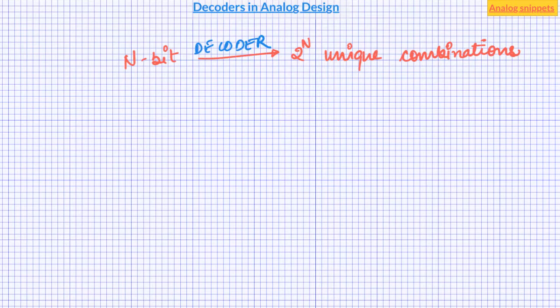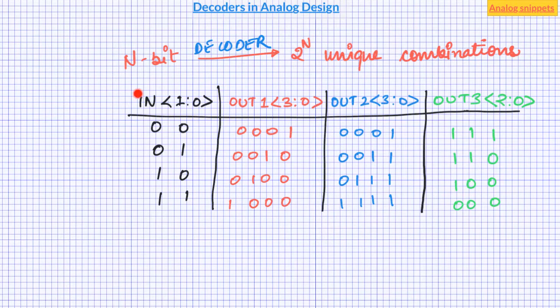Now there are many ways these combinations can be generated. For example, for a 2-bit signal we can think of these combinations. Here input is a 2-bit signal and output can be either 4-bit signal or 3-bit signal. There can be many more possible ways to arrange the outputs. But we will restrict our discussion to the decoders which are used commonly in analog design.